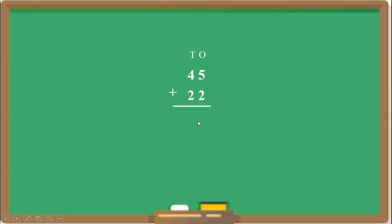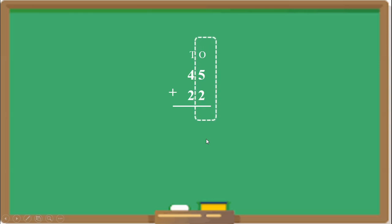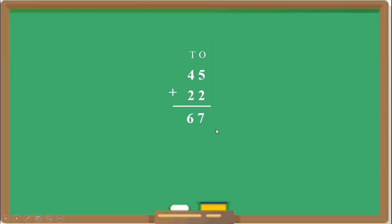This is the 1's place and this is the 10's place. Always start adding the numbers from the right side — that is the 1's place. So 5 plus 2 is 7. Now add the 10's place digit: 4 plus 2 is 6. So the addition of 45 and 22 is 67.